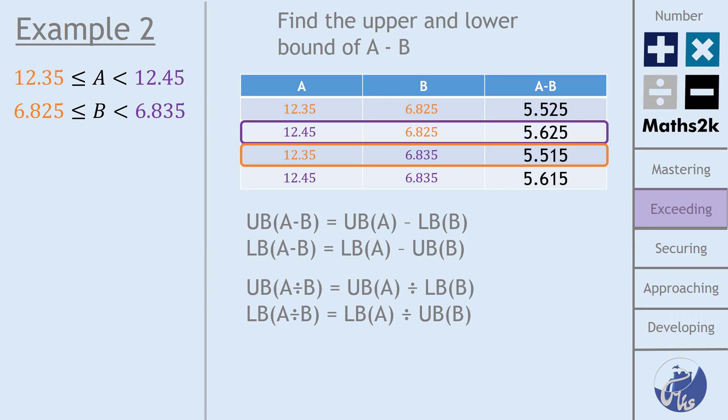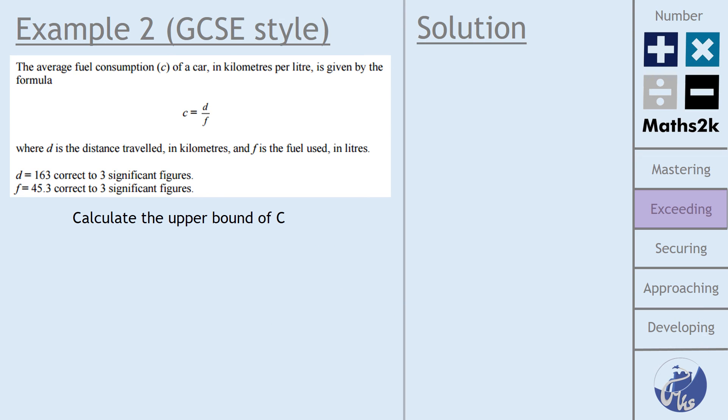Now, what I'm going to go through next is a GCSE exam style question, which I've modified a bit just for the purpose of this video. So here I've got a GCSE style exam question where I've modified it so that we've got a different question to what was being asked. But we are going to focus on finding the upper bound for C. And if we look at the formula, you can see that the calculation does involve division. So we've been told that the values have been rounded to three significant figures.